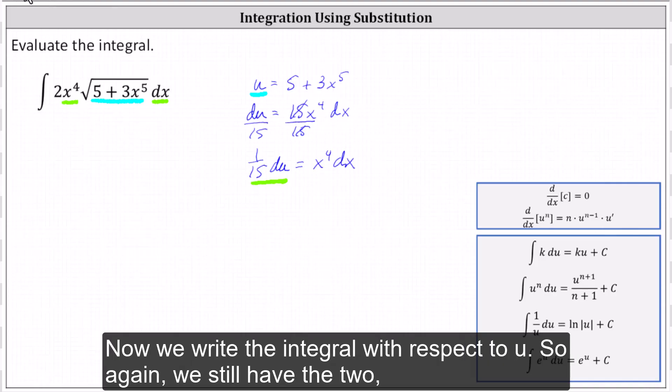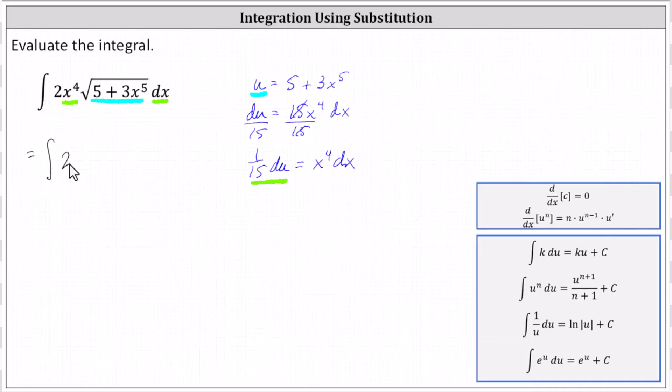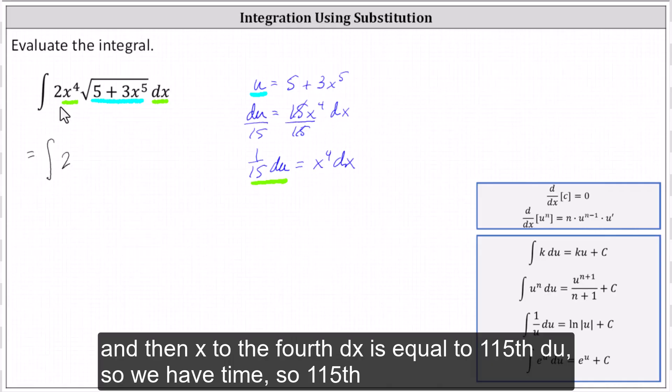Now we write the integral with respect to u. So again, we still have the two and then x^4 dx is equal to 1/15 du. So we have times 1/15 times du.